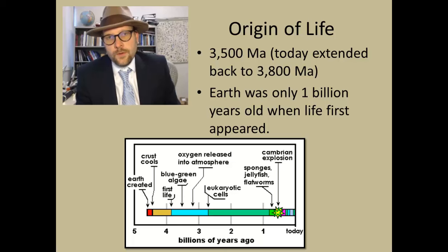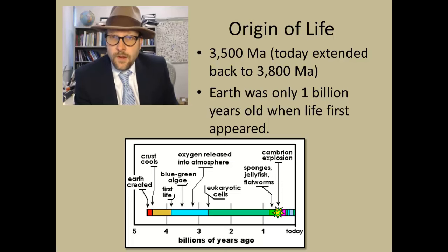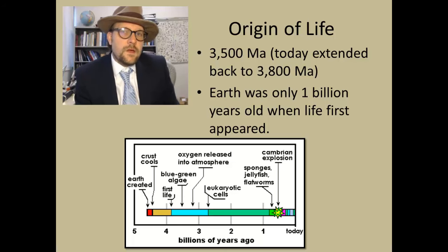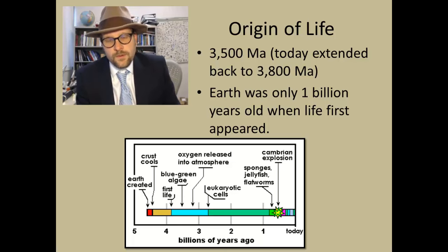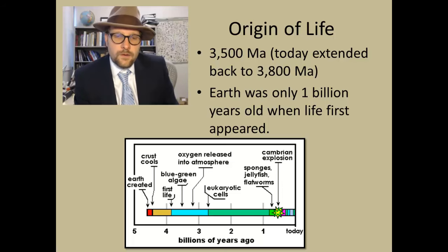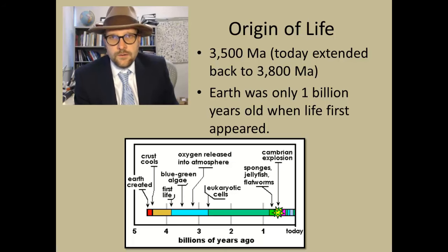The origin of life occurred about 3.5 billion years ago, or about 3,500 million years ago. Today this has been extended to about 3,800 million years ago based on isotopic signatures indicating that life was around very early — only about 1 billion years after the formation of the planet. Basically, once the planet cooled down enough to support oceans, we start to see the beginnings of life.